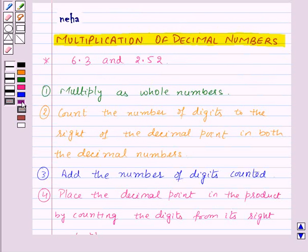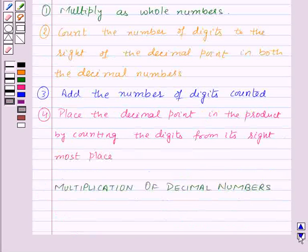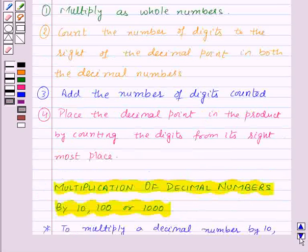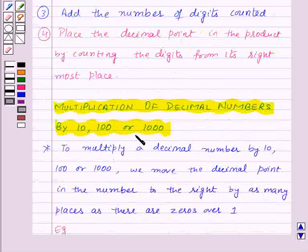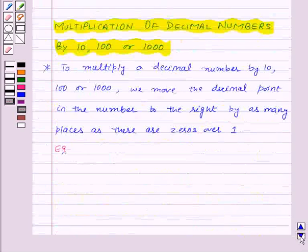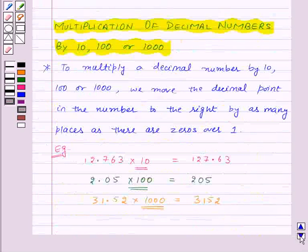Thus in this session we have learnt the multiplication of decimal numbers and multiplication of decimal numbers by ten, hundred, or thousand. With this we finish this session. Hope you must have understood all the concepts.